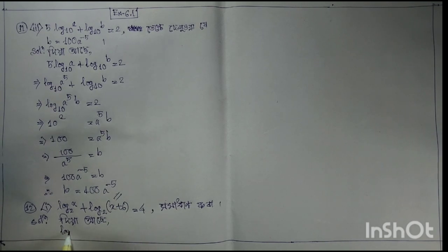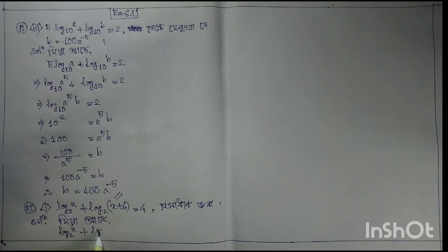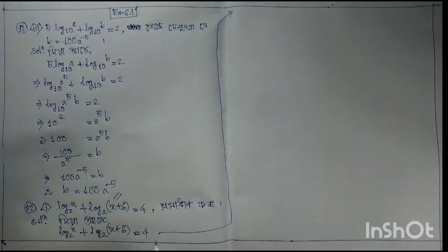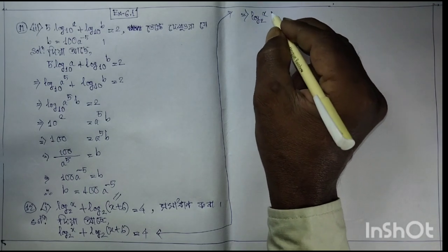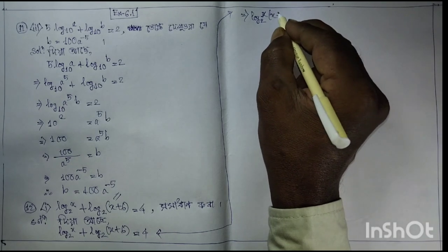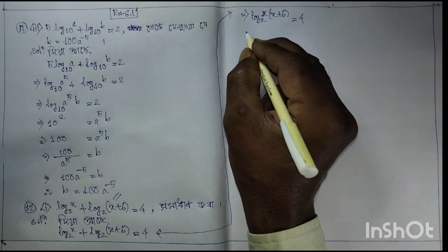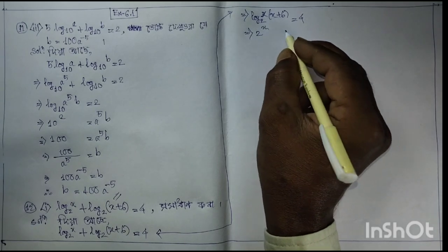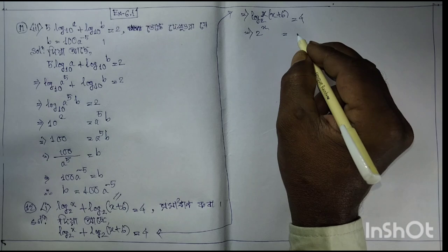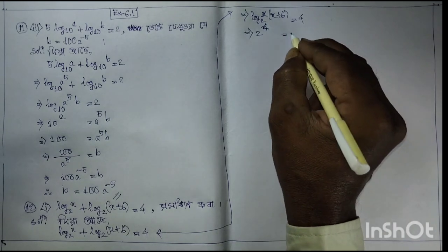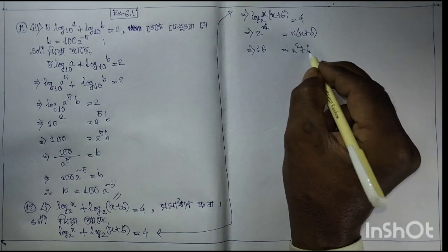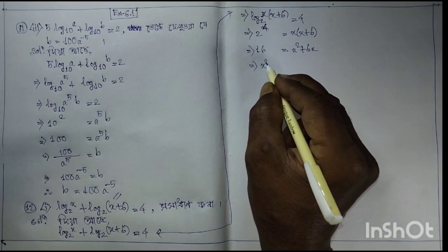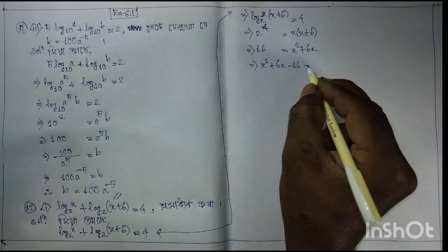log₂(x) + log₂(x + 6) = 4 implies log₂(x · (x + 6)) = 4, implies x(x + 6) = 2⁴ = 16, so x² + 6x − 16 = 0.